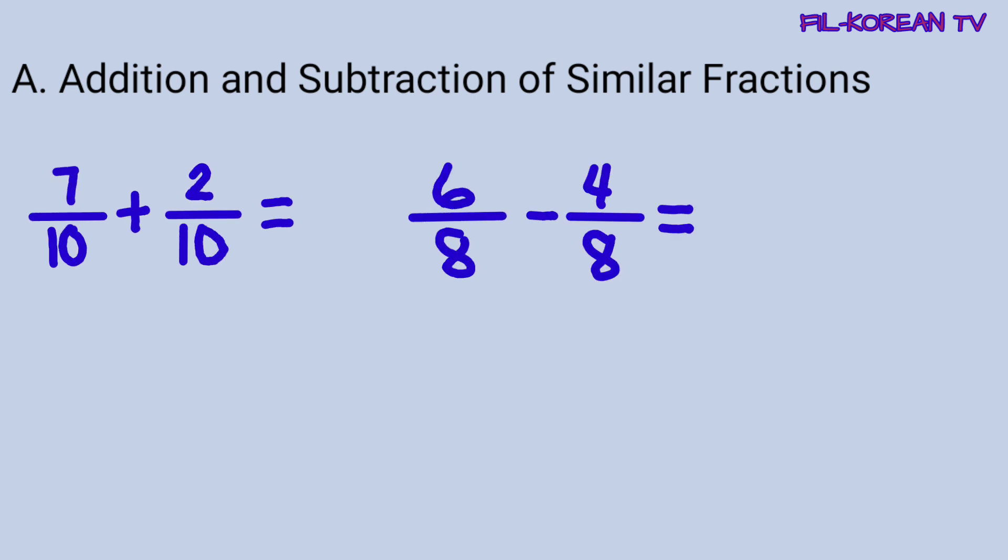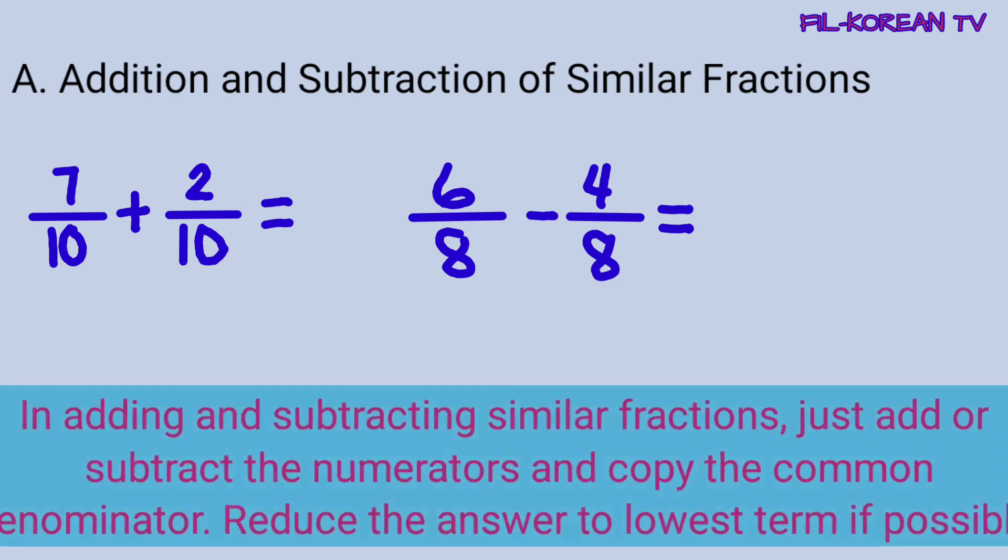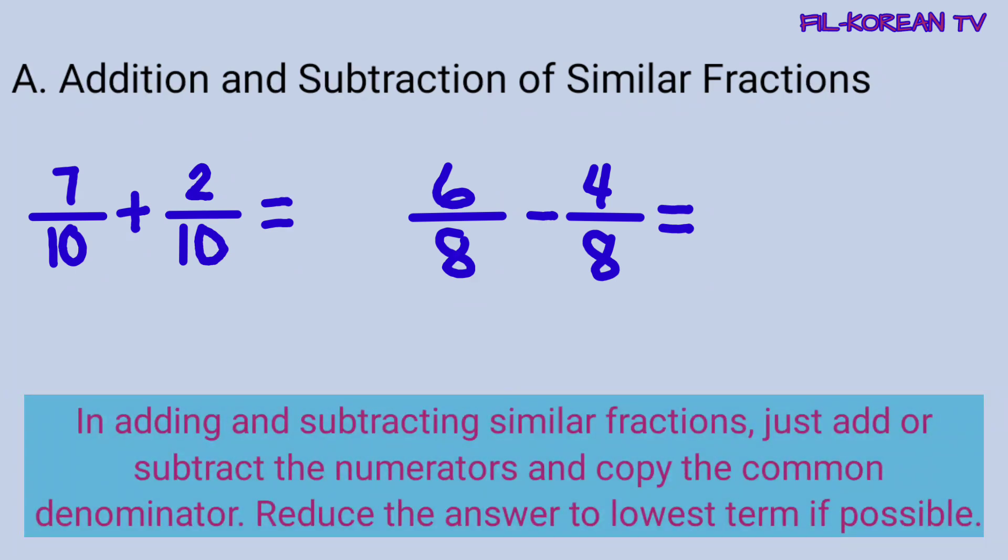Let's solve these problems. These fractions are similar fractions because the denominators are the same. In adding and subtracting similar fractions, just add or subtract the numerators and copy the common denominator. Reduce the answer to lowest term if possible.